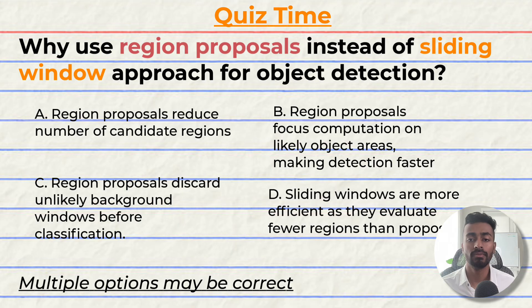A. Region proposals reduce the number of candidate regions. B. Region proposals focus computation on likely object areas, making detection faster. C. Region proposals discard unlikely background windows before classification. Or D. Sliding windows are more efficient because they evaluate fewer regions than proposals.